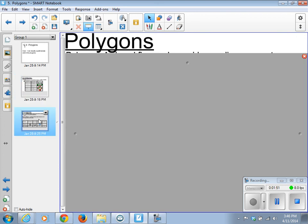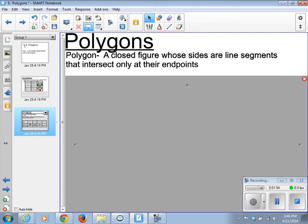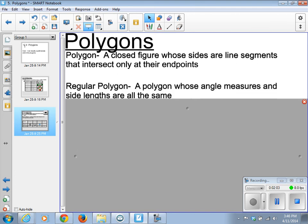Now, polygons. A closed figure whose sides are line segments that intersect only at their endpoints. Polygons are shapes, and poly means many, so we could have any sided shape.